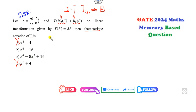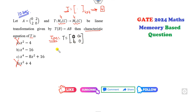Now, what is another tip as I usually give in my previous lectures? Whenever you have a matrix of the form [0, A; B, 0], what are the eigenvalues? The eigenvalues are ±√(AB). So corresponding to this, what is the eigenvalue? Plus minus 2.